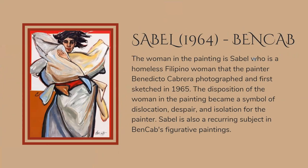Next we have Benedicto Cabrera's Sabel, or Ben Cab, finished in 1964. The woman in the painting is Sabel, a homeless Filipino woman that the painter Ben Cab photographed and first sketched in 1965. The disposition of the woman in the painting became a symbol of dislocation, despair, and isolation for the painter. Sabel is also a recurring subject in Ben Cab's figurative painting.